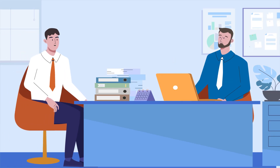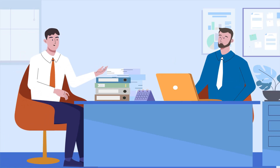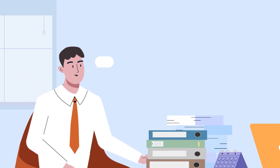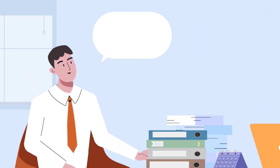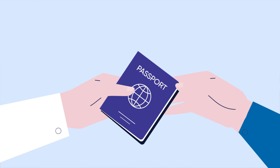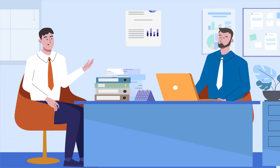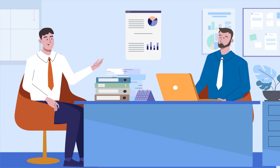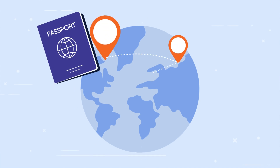When a bankruptcy trustee is appointed over a bankrupt estate, the bankruptcy trustee will normally request that the bankrupt surrender their passport to the Bankruptcy Trustee's Office. During the bankruptcy, the bankrupt can make an application to their bankruptcy trustee to travel overseas and return their passport. The bankruptcy trustee has discretion to allow the bankrupt to travel if they are satisfied that the bankrupt is meeting their obligations in the estate.